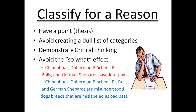Here's an example of the 'so what' effect: 'Chihuahuas, Doberman Pinschers, Pit Bulls, and German Shepherds have four paws.' So what? Why is that even important? It would be better for your thesis to be: 'Chihuahuas, Doberman Pinschers, Pit Bulls, and German Shepherds are misunderstood dog breeds that are mislabeled as bad pets.' Now you're demonstrating critical thinking.